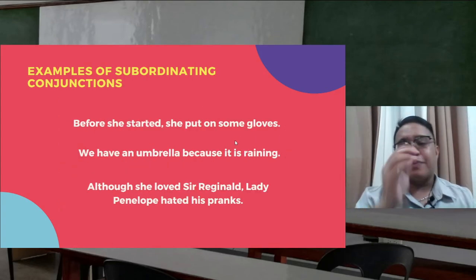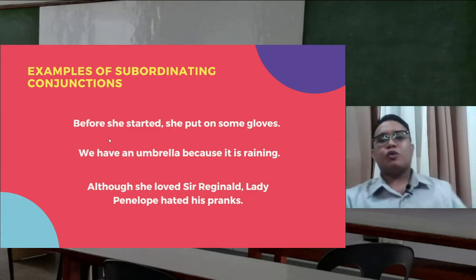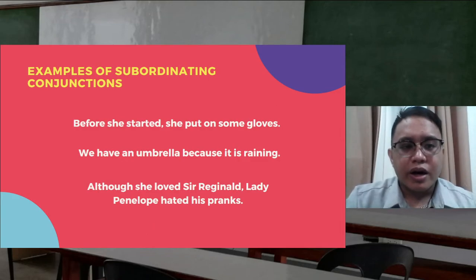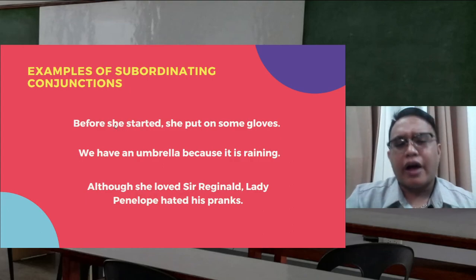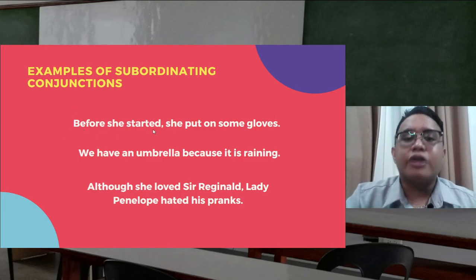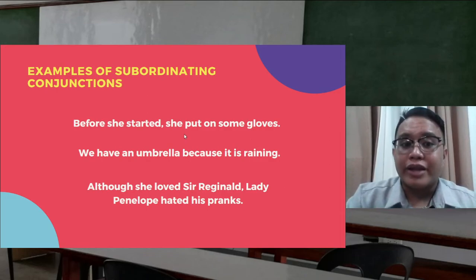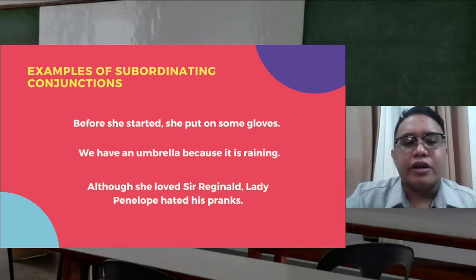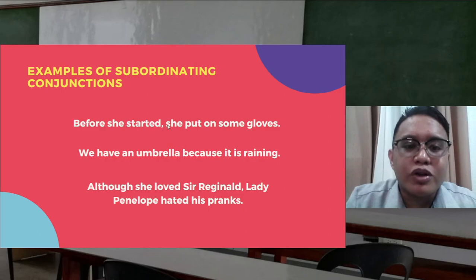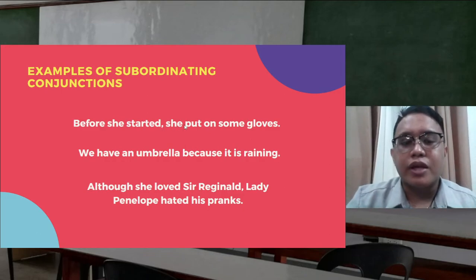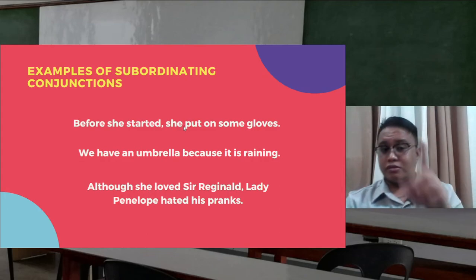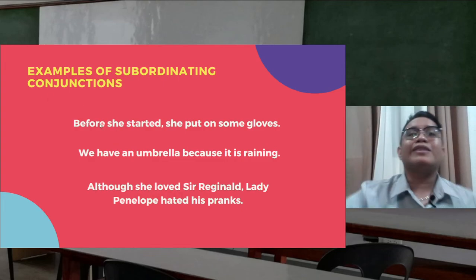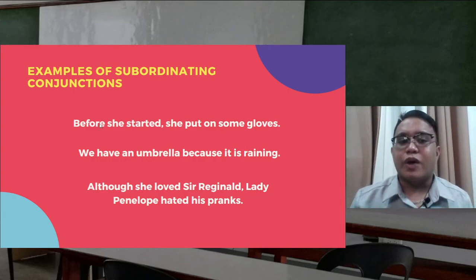Now I'll explain why they are called subordinating conjunctions. Take the example: 'Before she started, she put on some gloves.' If we remove 'before she started,' the sentence 'she put on some gloves' still makes sense on its own. But if we remove 'she put on some gloves' and keep only 'before she started,' that fragment does not make sense — it cannot stand alone. That's why it is subordinated to the main clause.